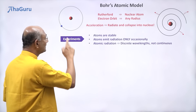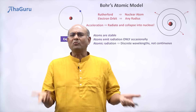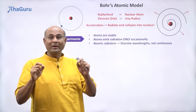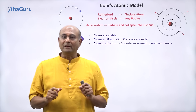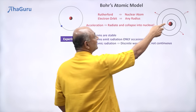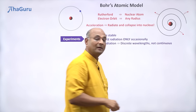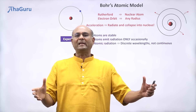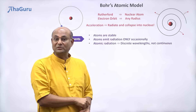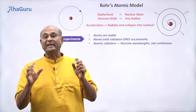But what do experiments show us? They show us that atoms are stable — they don't collapse like this. And atoms do emit radiation, but not continuously, only occasionally. If the electron were to spiral in like this, it must continuously emit radiation, but that is not what experiments show us. Atoms only emit radiation occasionally.